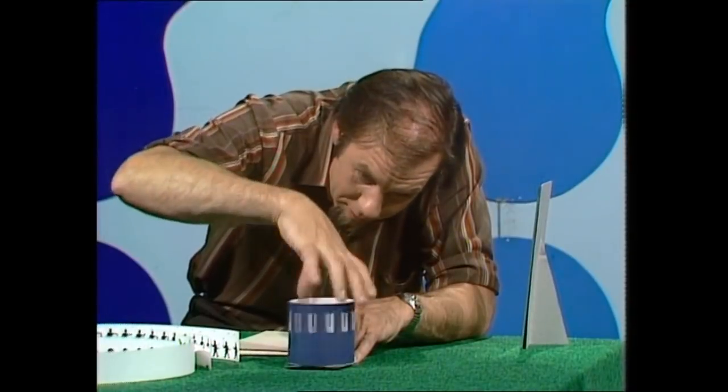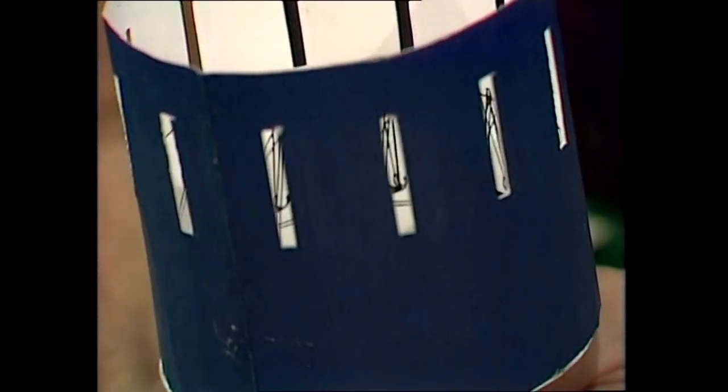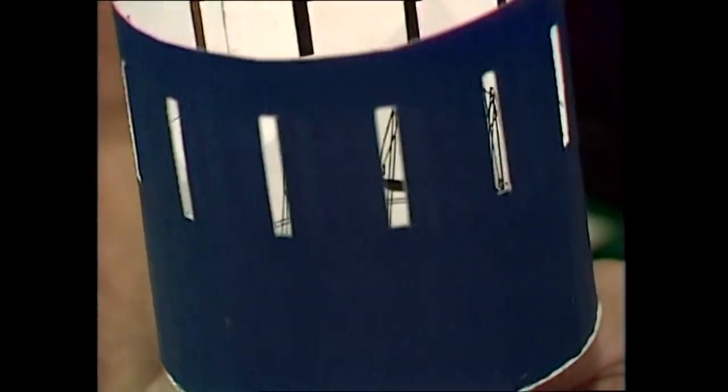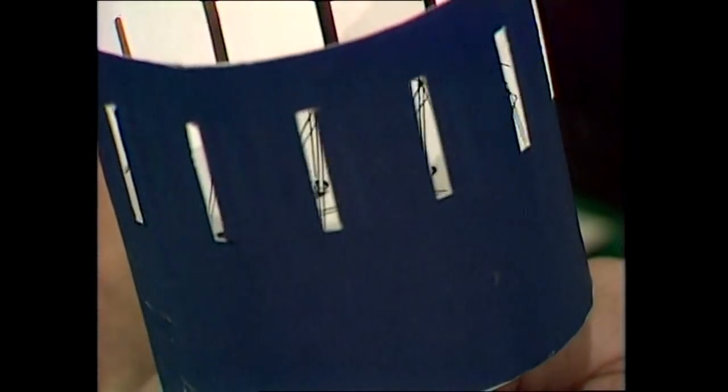Come and look at my early moving picture device. It's an intriguing thing, very simple, but it works pretty well. You can see it's a picture of a swing going back and forth, and as I spin it, if you look through those slits, you can actually see the swing moving back and forth in a repeated pattern.